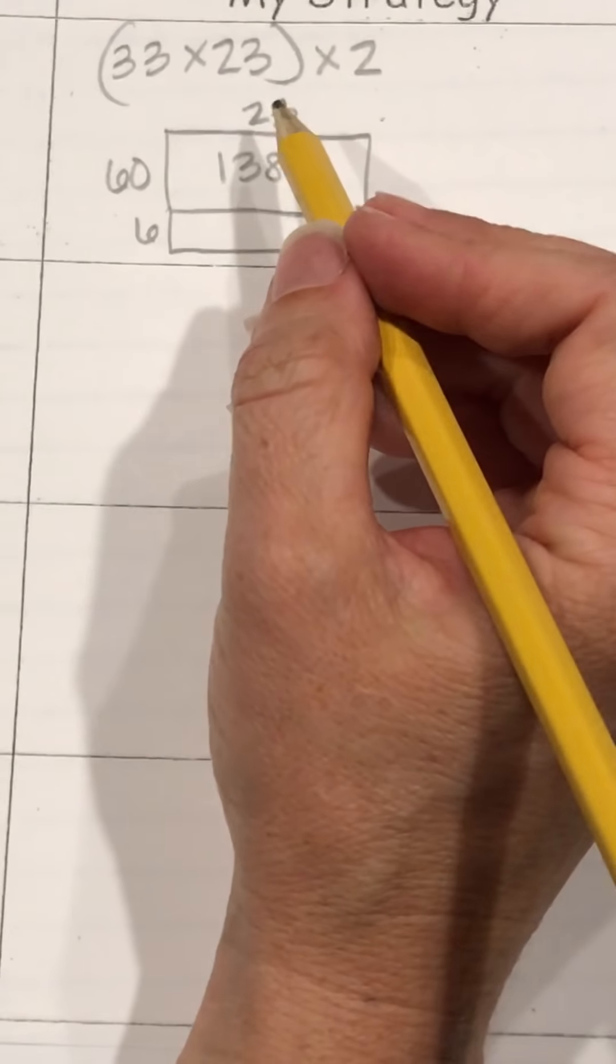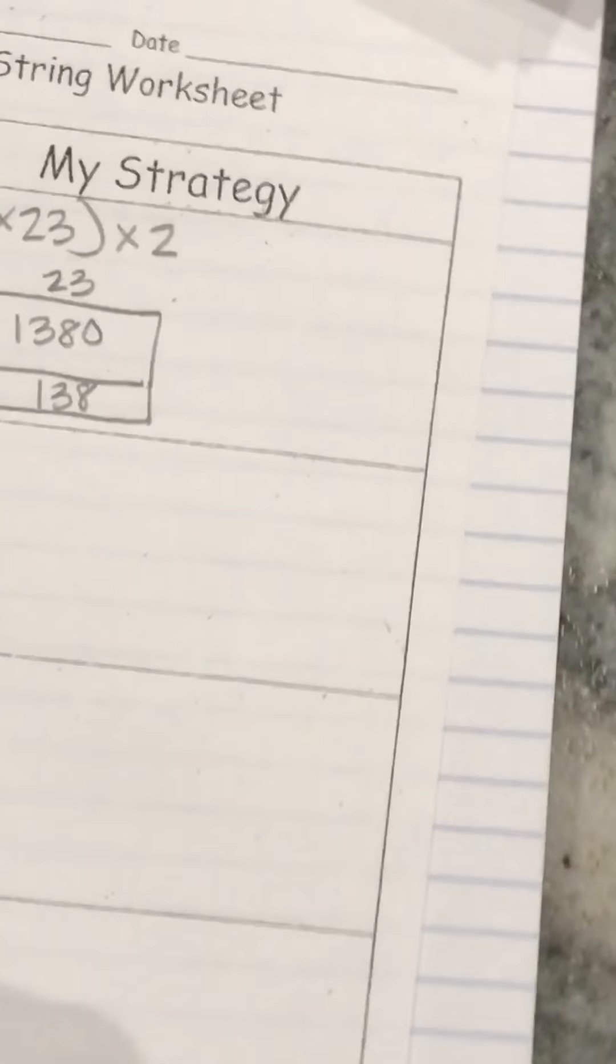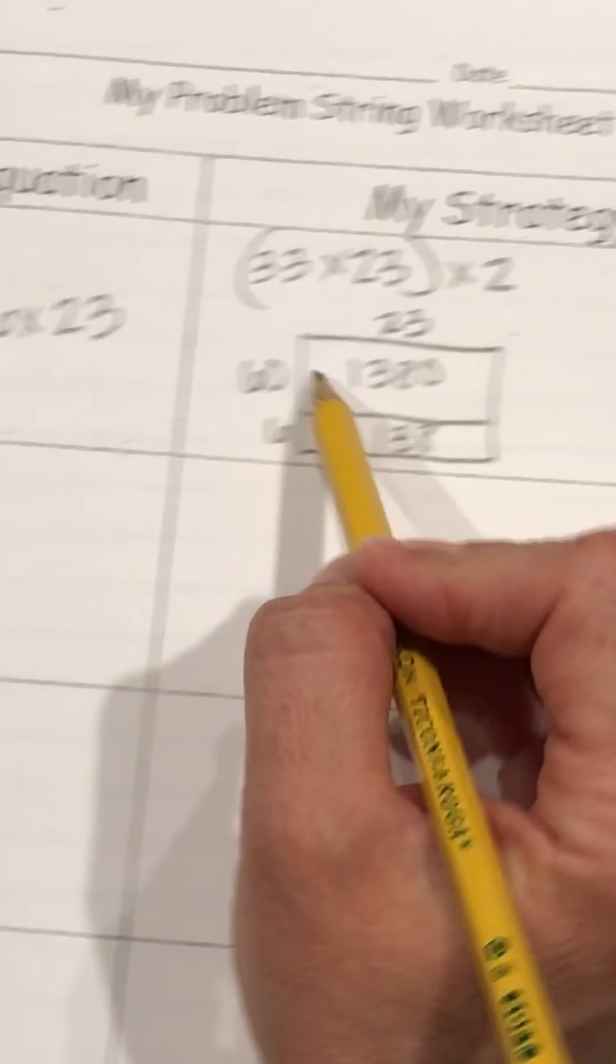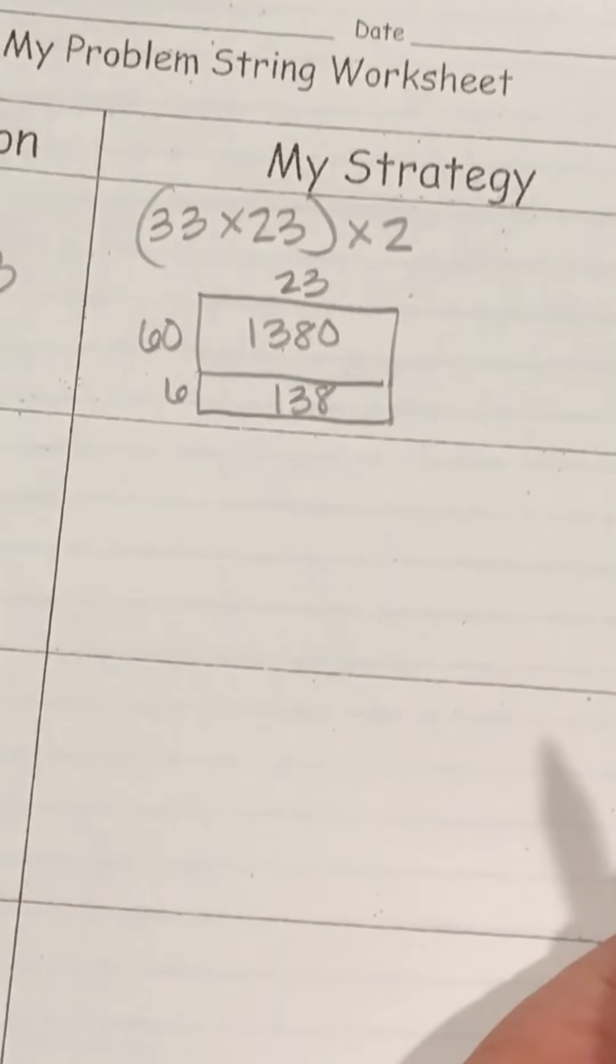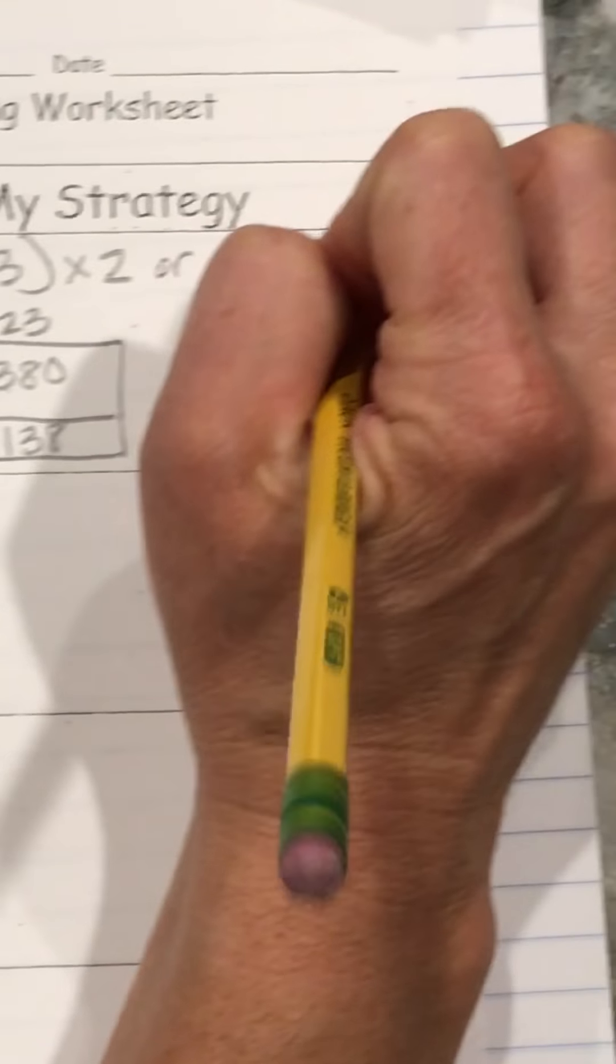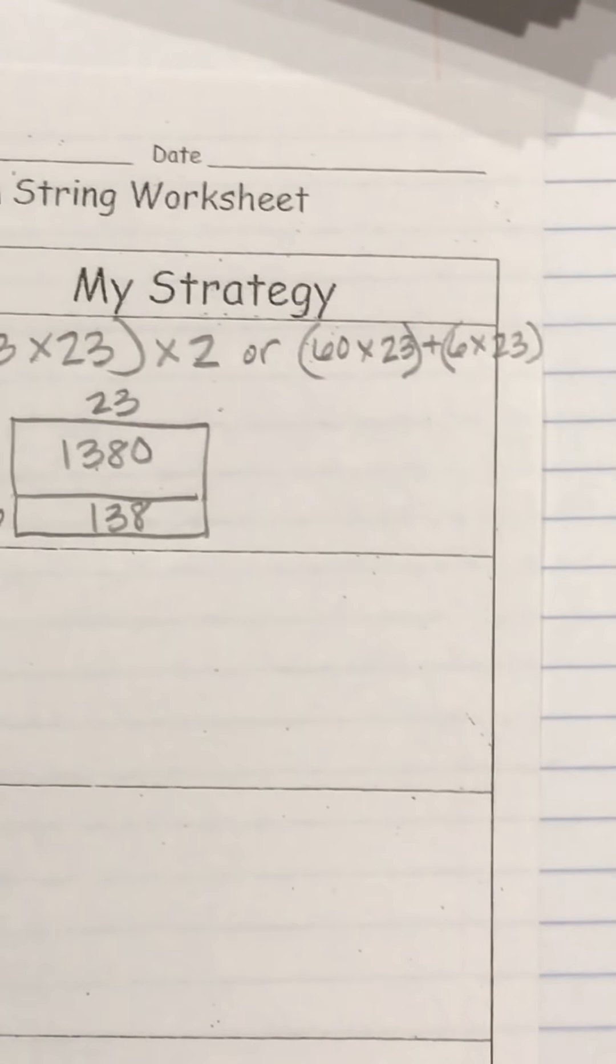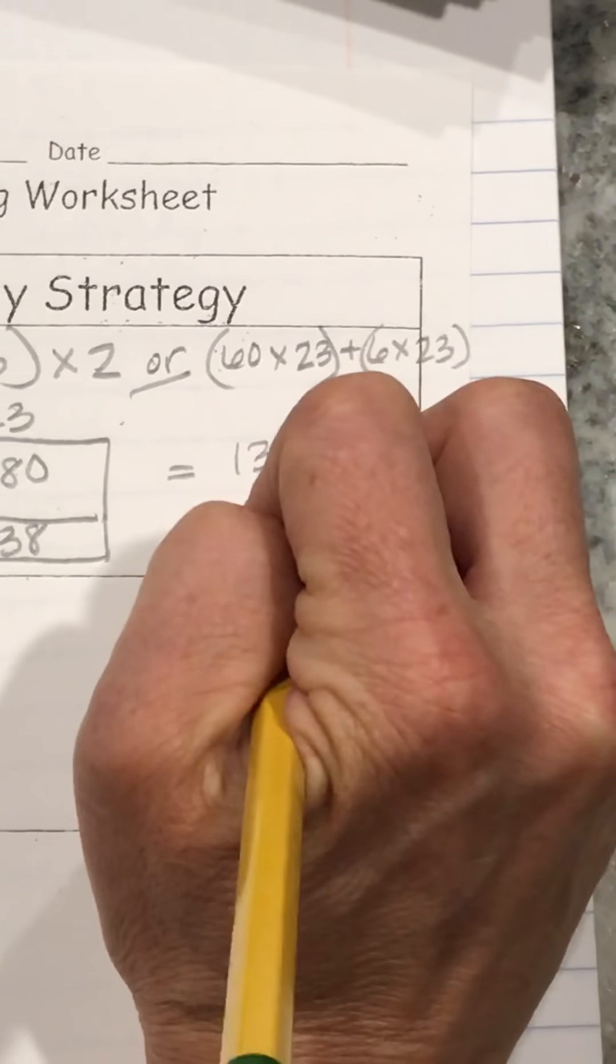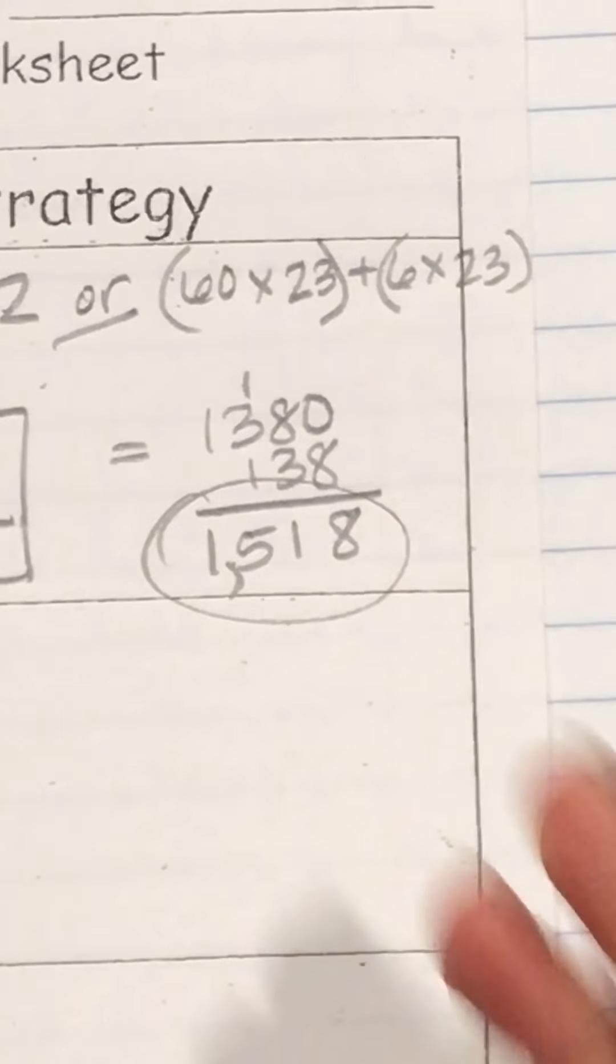So 6 times 23 is 138, and I can add those together. It depends on how I want to do it to get my answer. I can use my information from previously, or I can break it up to make it how I want to do it. Either way, it works by using partial product. And my answer is 1380 plus 138, which is 1518 for a final answer.